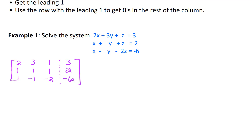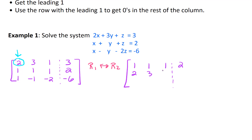Our goal is to work on column one first, and in that column I'd like to get a leading one in the first row, first column position. Right now I've got a two in there, and I don't want that. We could multiply by one half, but that's going to introduce a lot of fractions. So a better strategy is to interchange row one and row two. That gives us row one as one, one, one with constant two; row two as two, three, one with constant three; and the last row as one, negative one, negative two, negative six.